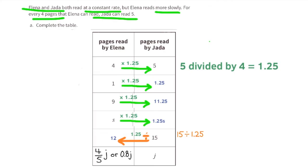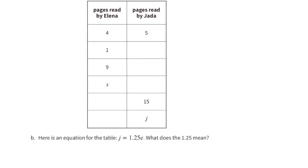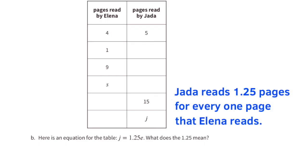When Jada reads J pages, Elena reads 4/5 or 0.8 of J pages. Part B: here is an equation for the table — J equals 1.25E. What does the 1.25 mean? It means that Jada reads 1.25 pages for every one page that Elena reads.